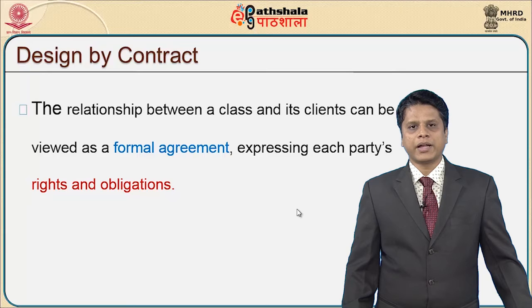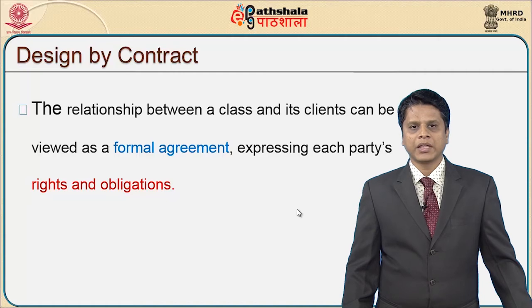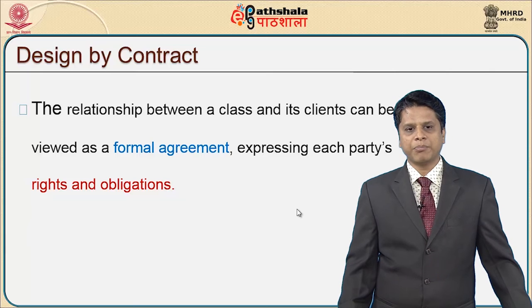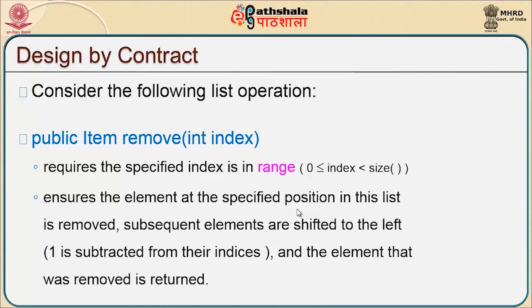When we look at design by contract, the relationship between a class and its clients can be viewed as a formal agreement, expressing each party's rights and obligations. Consider the operation public item remove with an integer index: it requires a specific index in the range 0 ≤ index ≤ size of the object. This ensures the element at the specified position is removed, subsequent elements are shifted left, and the removed element is returned.